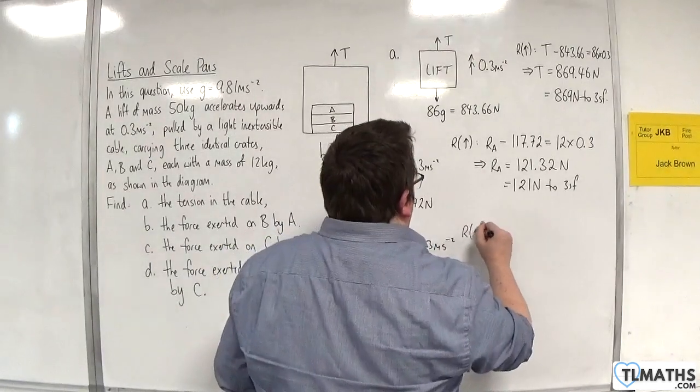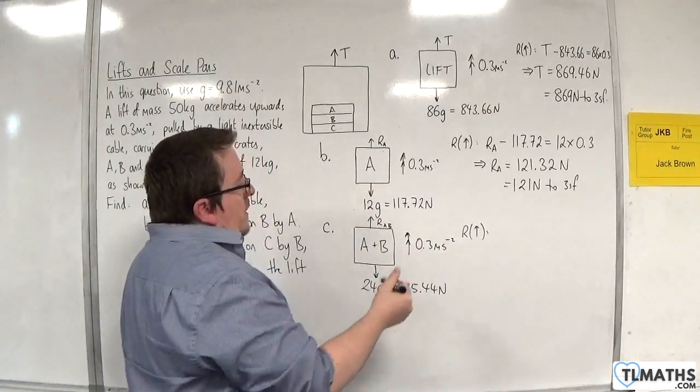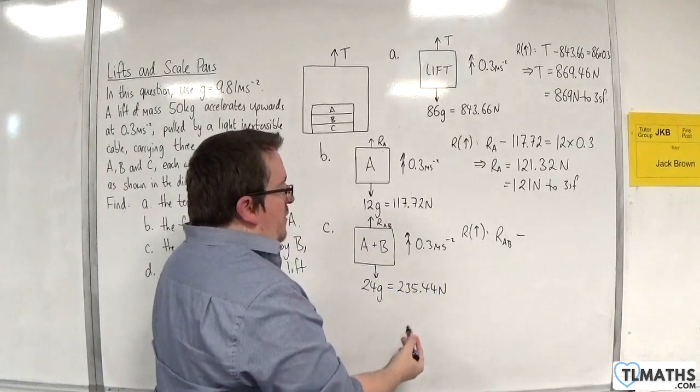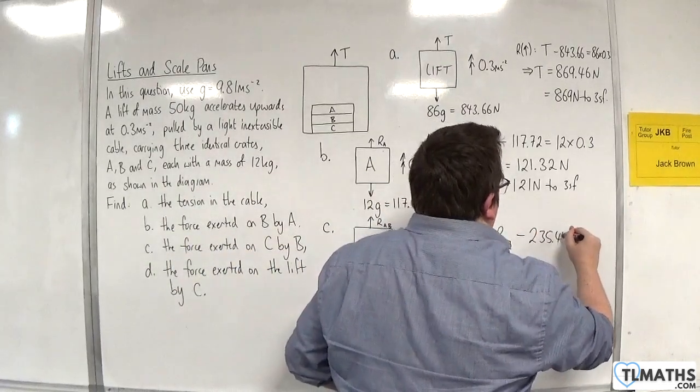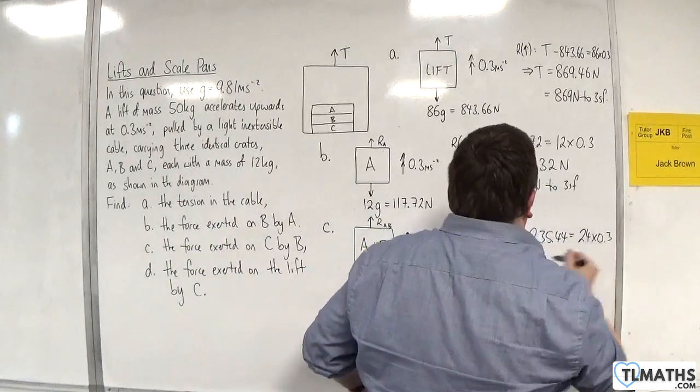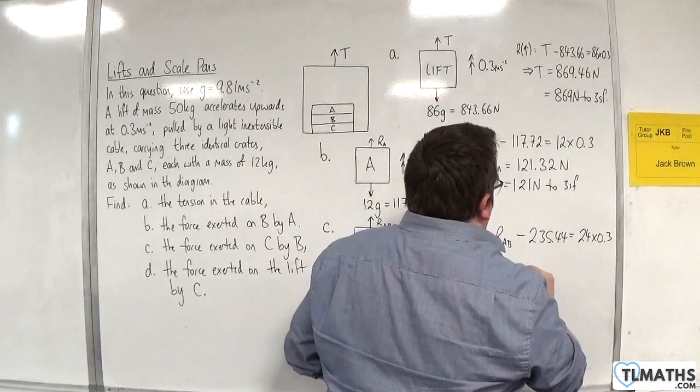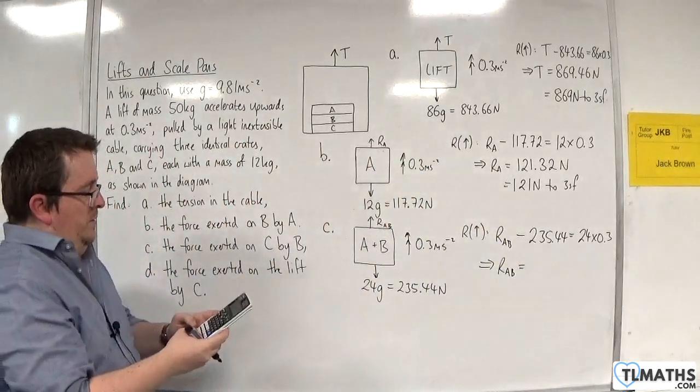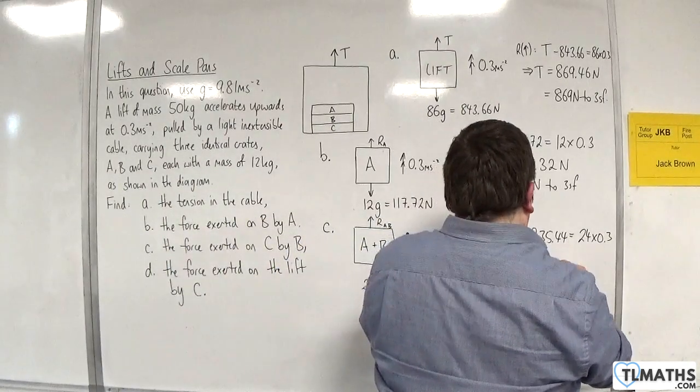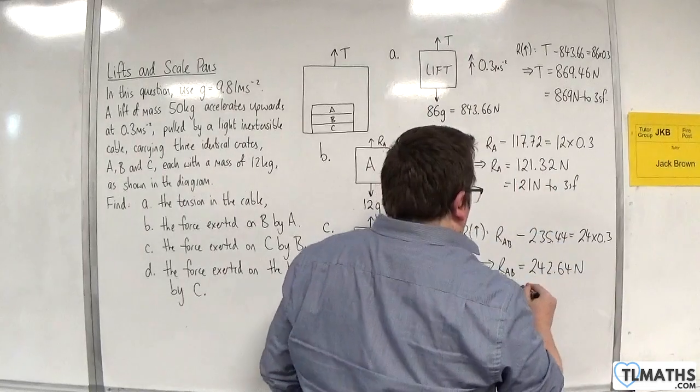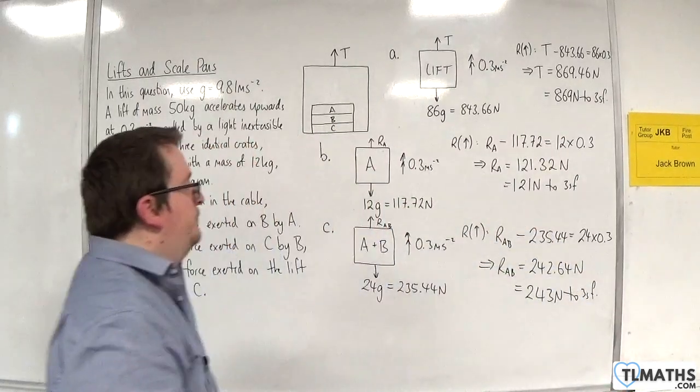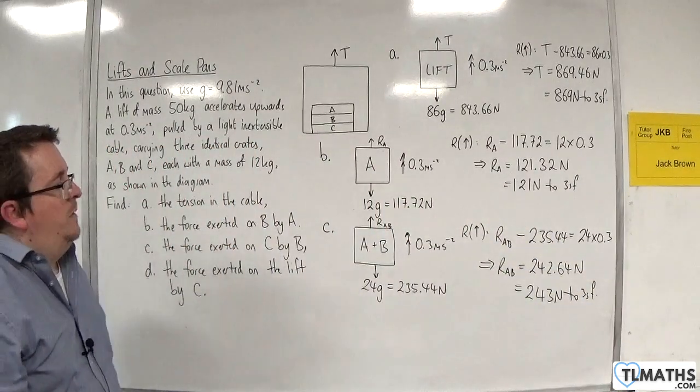And it's accelerating upwards at 0.3 meters per second per second. So if we resolve upwards, then we've got RAB take away 235.44 is going to be equal to the mass, which is 24, times by the acceleration 0.3. So this gives me a calculation to find RAB. So plus 24 times 0.3, and we get 242.64 newtons, which is 243 newtons to three significant figures.